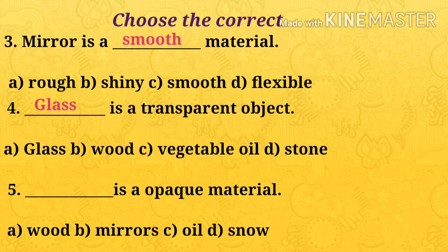Fifth one: dash is an opaque material — options are wood, mirrors, oil, snow. Which is the answer? Wood, because wood doesn't allow light to pass through it. Objects which don't allow light to pass through them are called opaque objects. Wood is an opaque material.